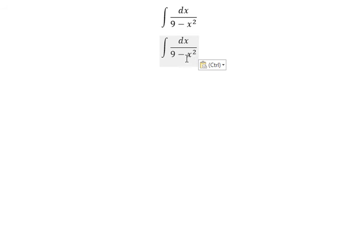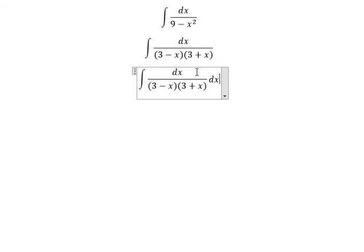This one you will get about 3 minus x multiplied with 3 plus x. Next, on the numerator we need to put about 3 minus x plus 3 plus x. Negative x with x they will cancel together. 3 plus 3 is about number 6.